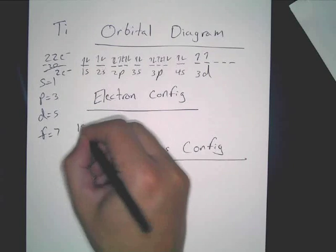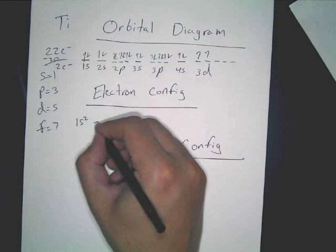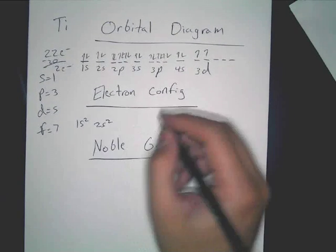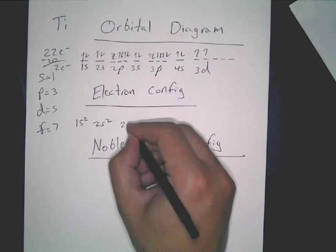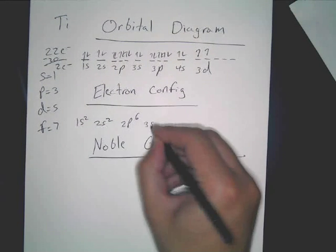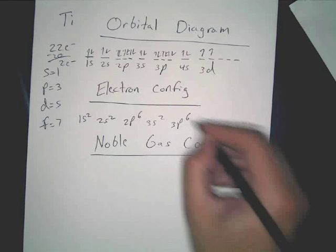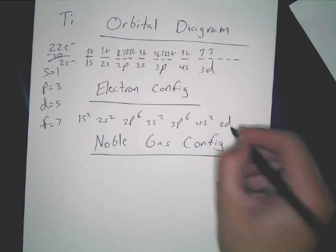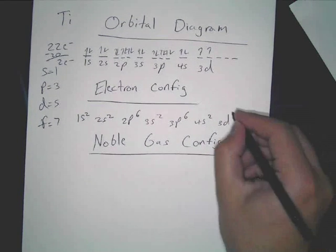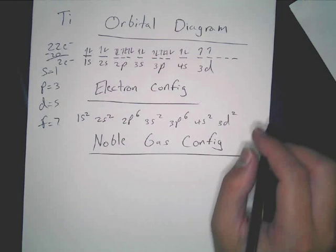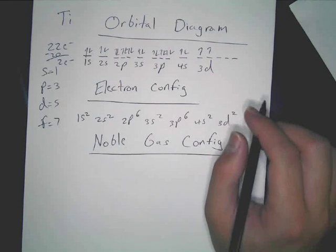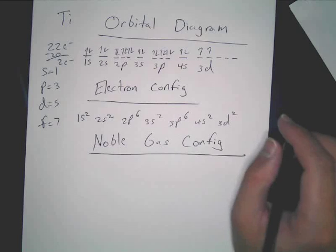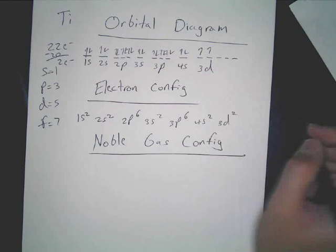Now, electronic configuration, you just go 1S2, because there's two arrows. 2S2. 2P6, 3S2, 3P6, 4S2. And then, for 3D, how many do I put in? 2. 2. Theoretically, D can hold 10. But, we only need to do two of them because there's only two of them available.